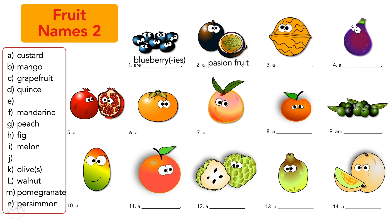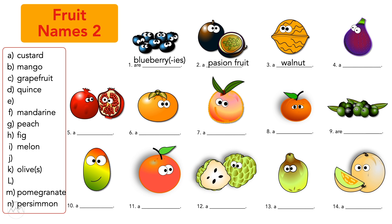Number three — This is a walnut. This is a walnut. Number four — This is a fig. This is a fig.